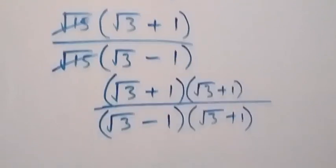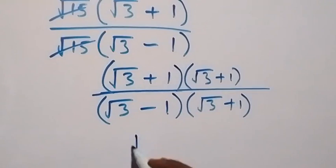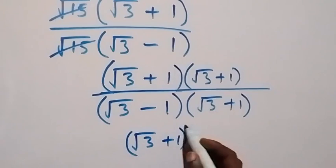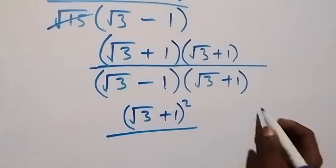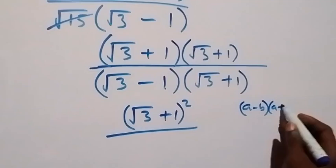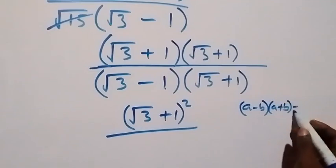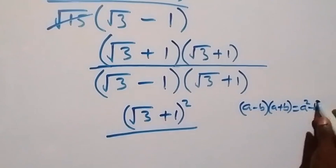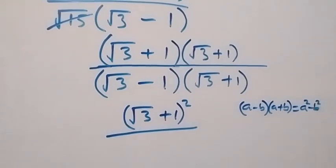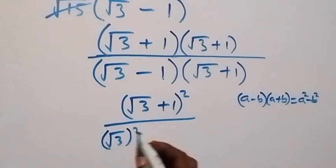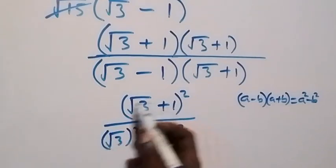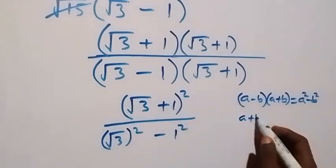What we have now can be written as (root 3 plus 1) all squared over — in the denominator, this follows the identity (a minus b)(a plus b) equals a squared minus b squared. So the denominator becomes root 3 squared minus 1 squared.